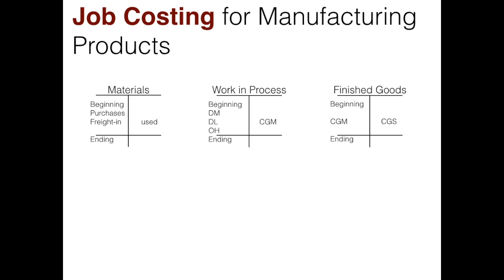Let's start by inputting the information that belongs in these three inventory accounts. They are inventory accounts, so they are assets and carry normal debit balances. We have beginning and ending balances. If we buy more materials that increases the account — those are our purchases. We also know that if we pay freight to get the materials to us as the buyer, that also increases the value of our materials.